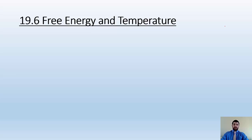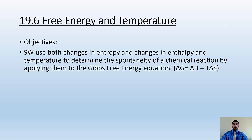How's it going, ladies and gentlemen? Mr. Donnie here again, taking a look at 19.6 stuff — Gibbs free energy and temperature. Our objectives are to use both changes in entropy and changes in enthalpy and temperature to determine spontaneity of chemical reactions by applying them to the Gibbs free energy equation, which is delta G equals delta H minus T delta S.